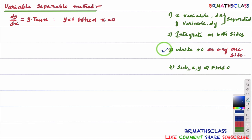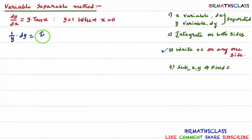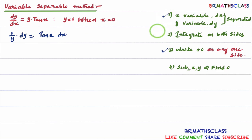The question asks to find the particular solution of the differential equation. First, I'll find the general solution, and then I'll find the particular solution. I'll take dx to this side and y to this side. Then you will get 1/y dy equal to tan x dx. You can observe here all x terms with dx written at one side, all y terms with dy written at one side. That means step 1 is over — x variable dx and y variable dy is separated.